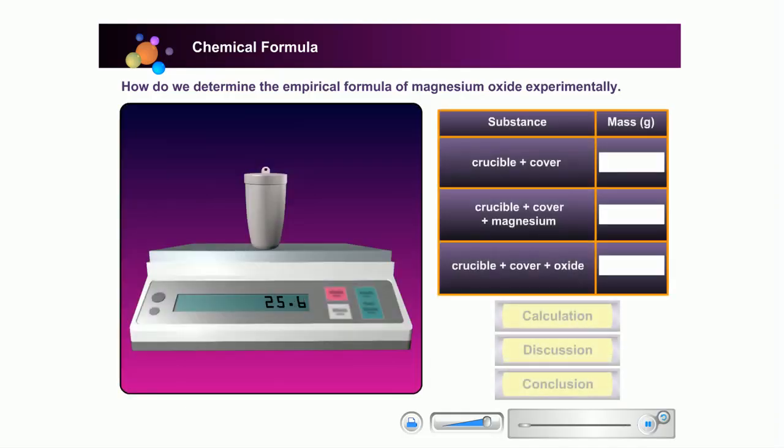How do we determine the empirical formula of magnesium oxide experimentally? Weigh an empty crucible and its cover, record the mass. Key in the mass in the table provided.